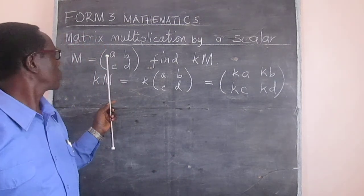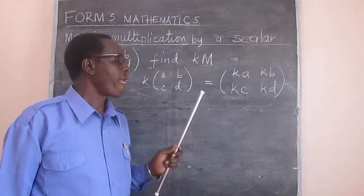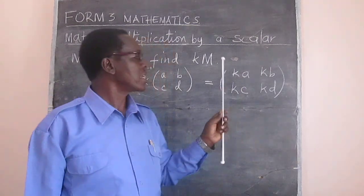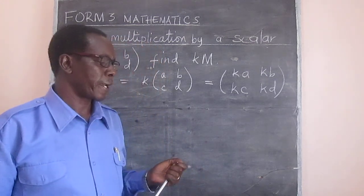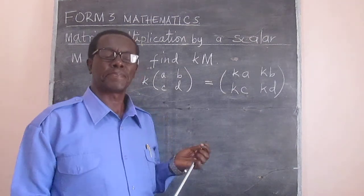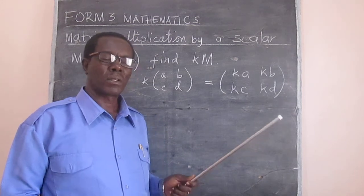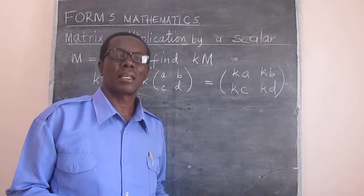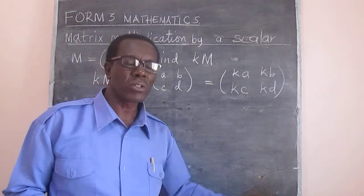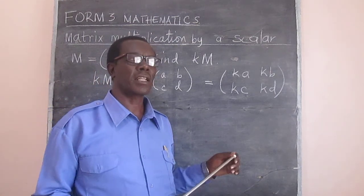We have been given matrix M with elements A, B, C, D, and we have been asked to multiply that matrix by scalar K. It is going to be K times that matrix, and you simply multiply every element by K. Now let's look at an example incorporating what we did in the last video — addition — and we will also see subtraction. For subtraction, the matrices must be of the same order, meaning the same number of rows and columns.